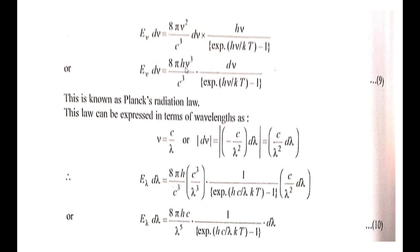This expression is in terms of frequency. The same expression in terms of wavelength: using ν = c/λ and dν = −(c/λ²) dλ, substituting gives E_λ dλ = (8πhc/λ⁵) · 1/(e^(hc/λkT) − 1) · dλ. This is Planck's Radiation Law in wavelength form.